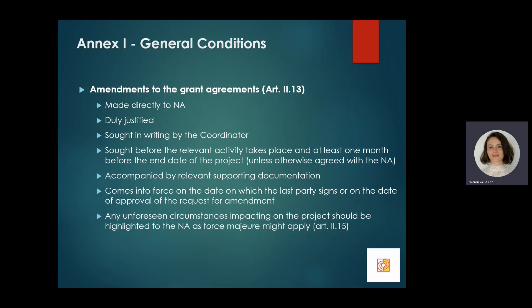Several changes may take place throughout the project life cycle. If anything unexpected occurs, please communicate it clearly to Largas to see what can be done. Changes can often be accounted for through amendments, which could include changes as large as project activities or as small as bank account details. Amendment requests must be made in writing directly to the national agency, must be justified before the relevant activity takes place, and submitted at least one month before the end date of the project.